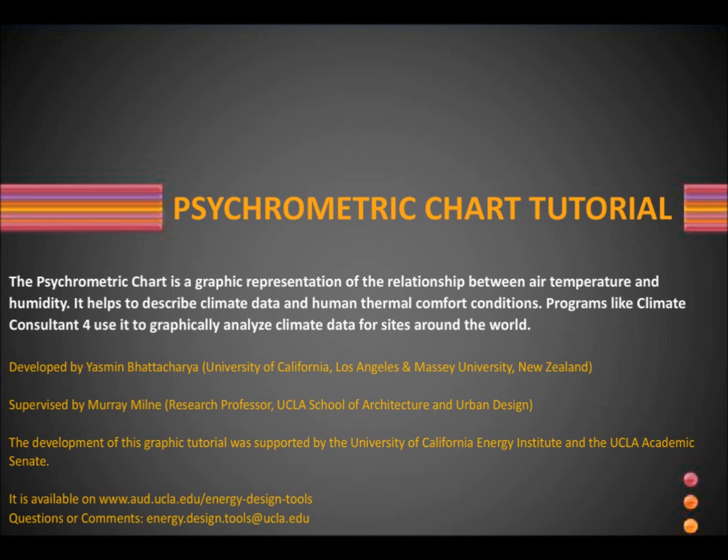Psychrometric chart is a graphic representation of the relationship between air temperature and humidity. It helps us to show the differences in climate data for sites around the world. It also helps us to find human thermal comfort conditions. Programs like Climate Consultant 4 use it to graphically analyze hourly climate data files that you can download for thousands of different locations.